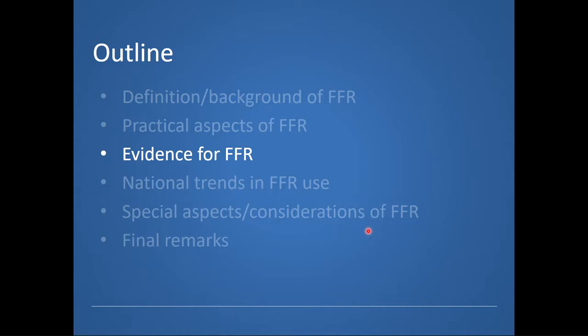Before moving on to the evidence for FFR, I want to mention that once a pressure wire is placed in the coronary vessel, it is very important to administer intracoronary nitroglycerin to vasodilate the epicardial vessels. Sometimes the FFR result will be falsely positive — abnormal, suggesting myocardial ischemia — because of epicardial spasm making the lesion worse than it really is. I always take care to administer nitroglycerin once the pressure wire is in the distal vessel and prior to obtaining FFR measurements.